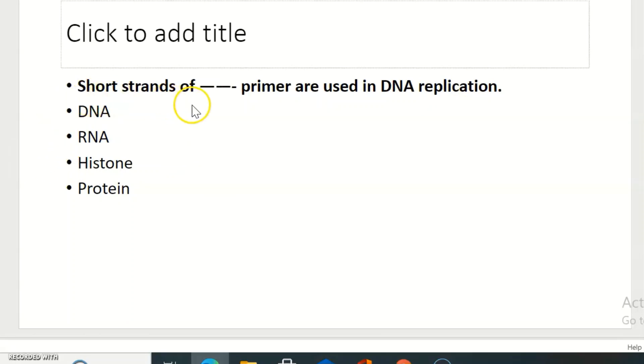Short strands of primer is used in DNA replication. DNA, RNA, histone and protein. The right answer is RNA. Short RNA primer is used in DNA replication.